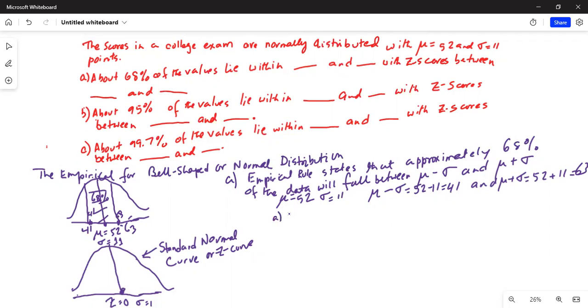So to answer part A, about 68% of the data, of the values, lie within 41 and 63 with z-scores. So if I draw the same information on the z-curve, so if I draw corresponding on the z-curve, this is minus 1 and this is positive 1 on the axis and this area is 68%.